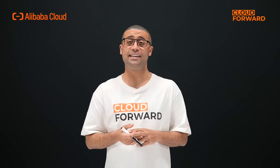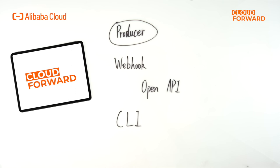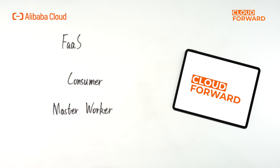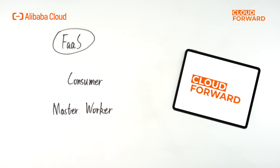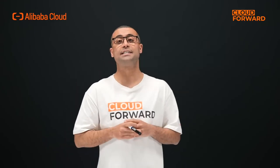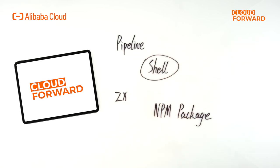Through Serverless CD, developers can quickly build enterprise-level application management platforms. Trigger plays the role of a producer in the event-driven architecture. Serverless CD currently provides three trigger modes: automatic trigger through webhook, trigger through open API, and trigger through CLI. The pipeline platform is the core part of the entire platform and plays the role of the consumer in the event-driven model, adopting the classic master-worker model. Serverless CD supports three ways of customizing pipelines: shell scripts, ZX scripts, and using custom application NPM packages for extension.